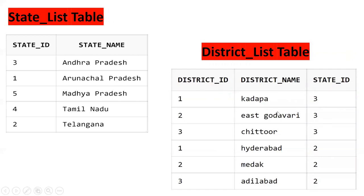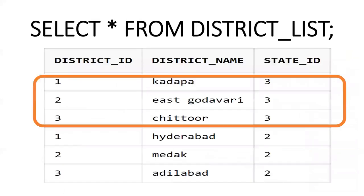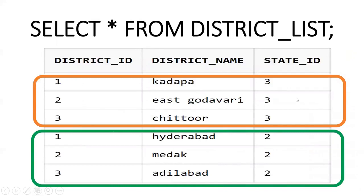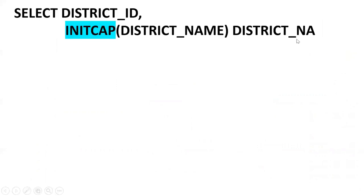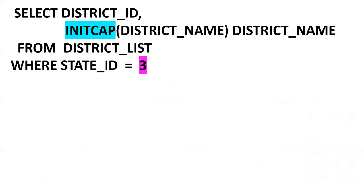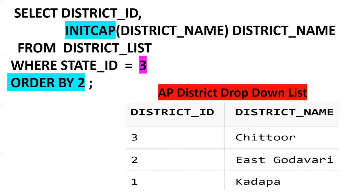Looking at the district_list table, districts like Kurnool, Nellore, Chittoor have state_id 3 (Andhra Pradesh), while Hyderabad and Adilabad have state_id 2 (Telangana). The query is: SELECT district_id, INITCAP(district_name) AS district_name FROM district_list WHERE state_id = 3 ORDER BY 2. Here 3 is the state_id for Andhra Pradesh. This gives the districts in sorted order with the first letter of each word in uppercase.